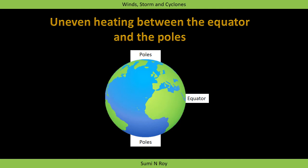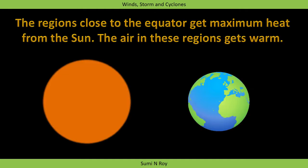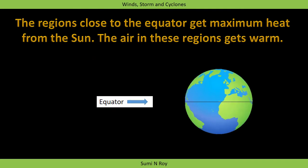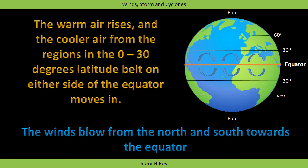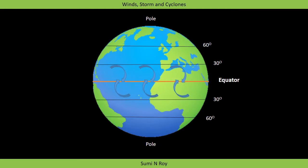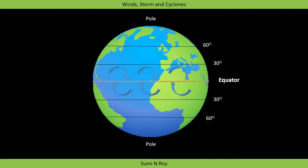Let us discuss how wind is produced by the uneven heating between the equator and the poles of the earth. The region close to the equator gets maximum heat from the sun, so the air in the equatorial region gets heated and becomes warm. The warm air rises in the equatorial region, creating an area of low air pressure. The cooler air from the region up to 30 degree latitude belt on both sides of the equator rushes towards the equator to take the place of the warm rising air. This makes the wind blow from the north and south directions towards the equator, as shown in the figure.